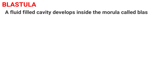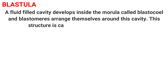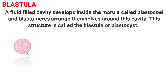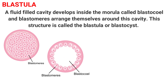The next heading is blastula. A fluid-filled cavity develops inside the morula called blastocele, and blastomeres arrange themselves around this cavity. This structure is called the blastula or blastocyst. Here you can see the diagram of the morula which is completely filled with blastomeres. The change that converts it into blastula is that the blastomeres arrange themselves at the periphery, causing a cavity to develop in the center — this cavity is called blastocele.